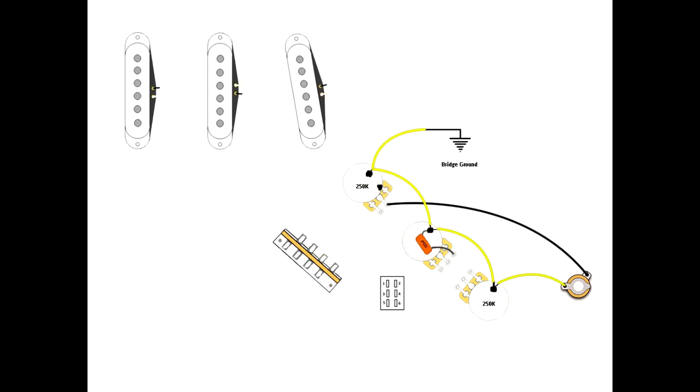First thing we want to do, as always, standard grounding. Ground the three pots together, as I'm showing here. Put your capacitor in, ground to your bridge, and then ground to the jack. This is going to help you prevent a ground loop. Make sure you follow this in order to properly ground the components on the guitar.